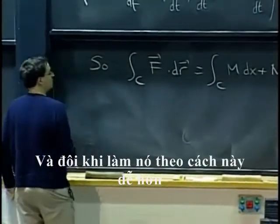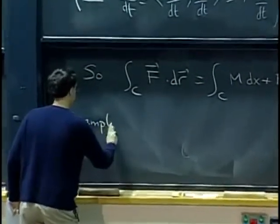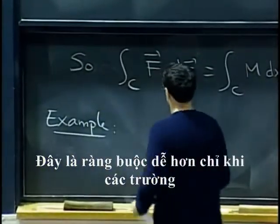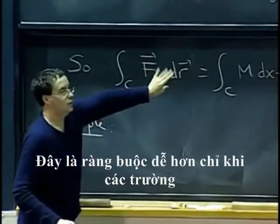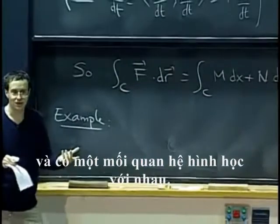And sometimes it is easier to do it this way. So here is an example. This is bound to be easier only when the field and the curve are relatively simple and have a geometric relation to each other.